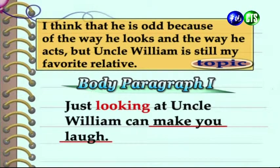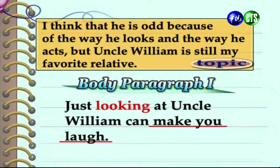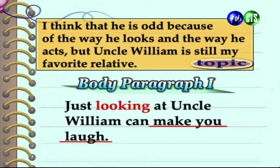Here is the topic sentence of the first body paragraph: 'Just looking at Uncle William can make you laugh.' 好，第一個主體論述段落的主題句提到說，光是看著威廉叔叔就讓人想笑。This topic sentence uses words that are slightly different from the words in the thesis statement, but the topic of this first body paragraph matches the first idea that was presented in the thesis statement. 這個主題句使用的字和我們在主旨陳述中用到的稍微有點出入，但你依然可以看得出來，第一個主體段落的主題句和主旨陳述中提到的第一個想法是相符合的。